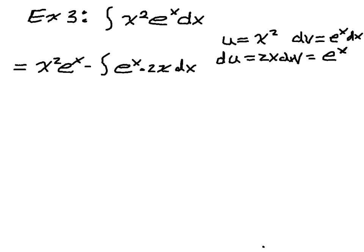So what do I have? I have x squared e to the x minus 2 times the integral of x e to the x dx. But what do I do now? Well, x e to the x dx actually looks to me like another candidate for integration by parts.